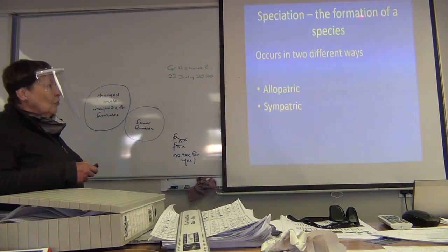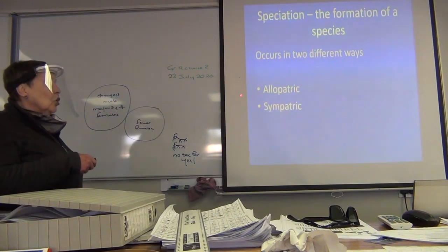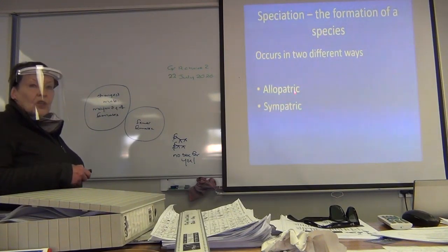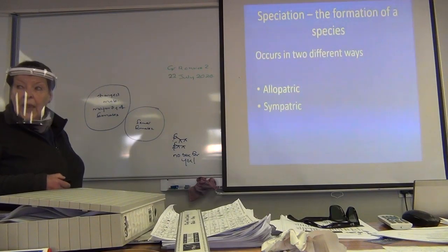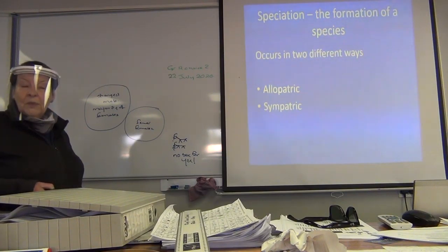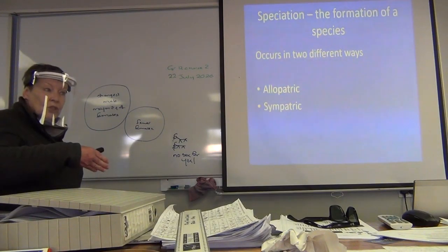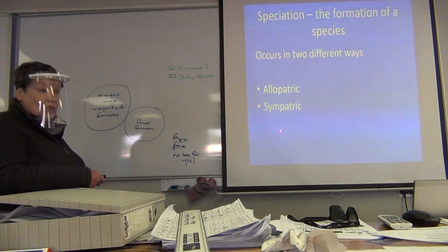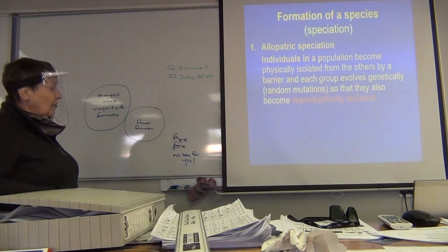Speciation is the process of forming a new species. And it occurs in two different ways. You have to know it. They will give you a scenario and they will say what type of speciation occurred here. And you've got to be able to say allopatric or sympatric and you've got to be able to justify it.